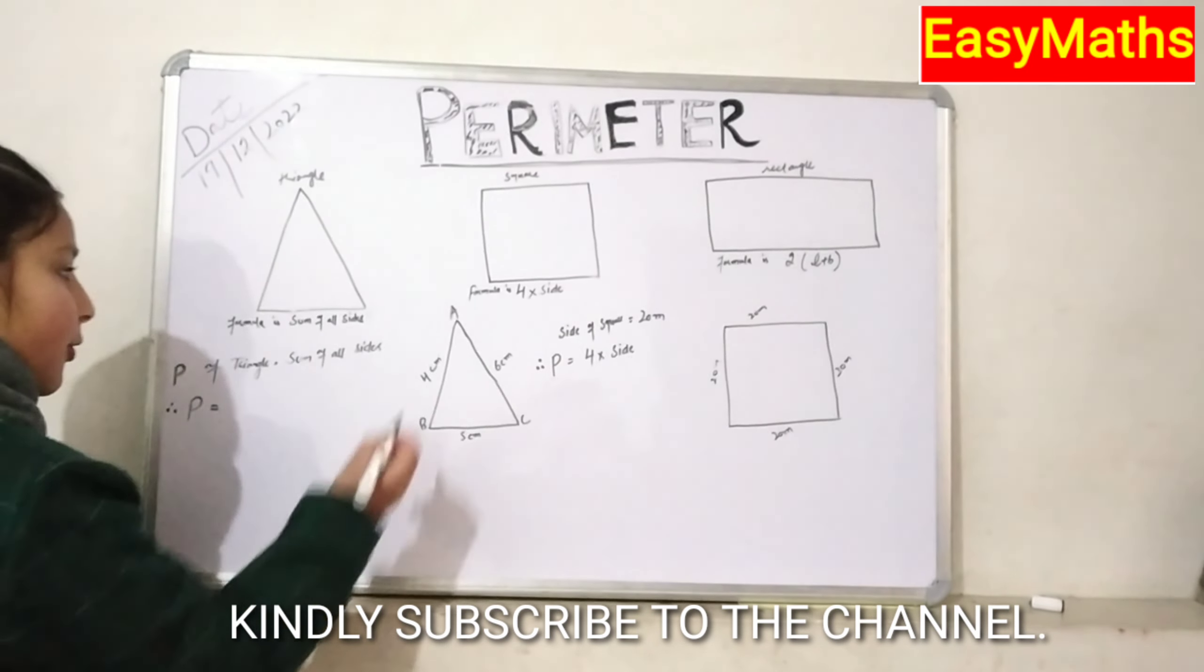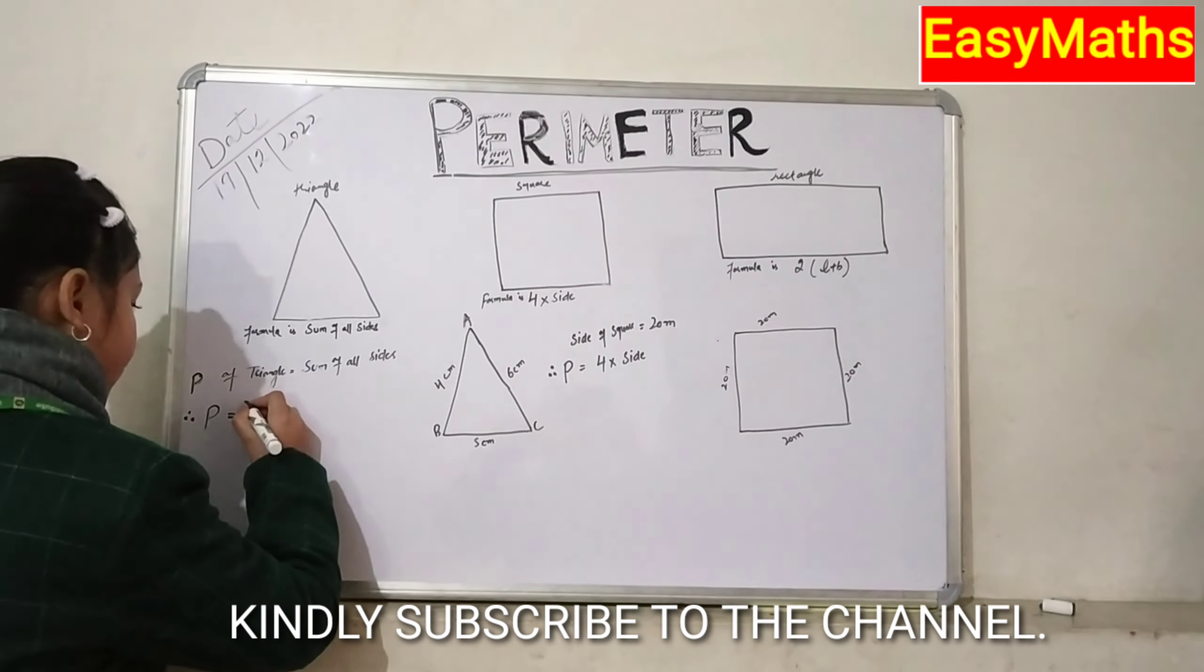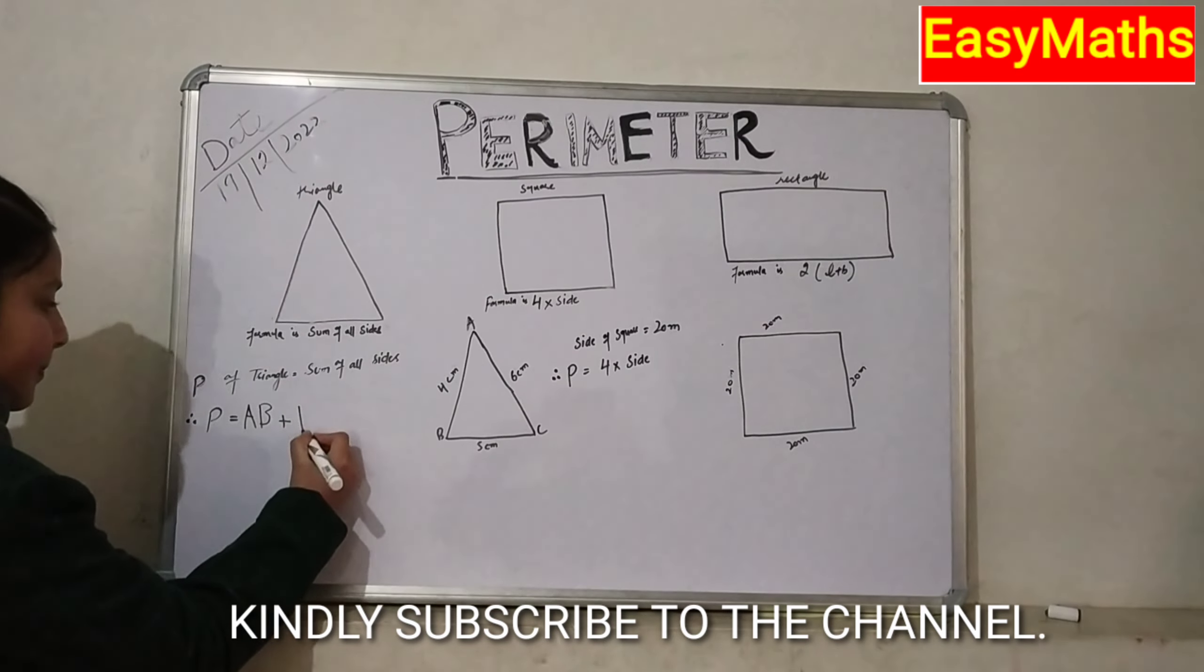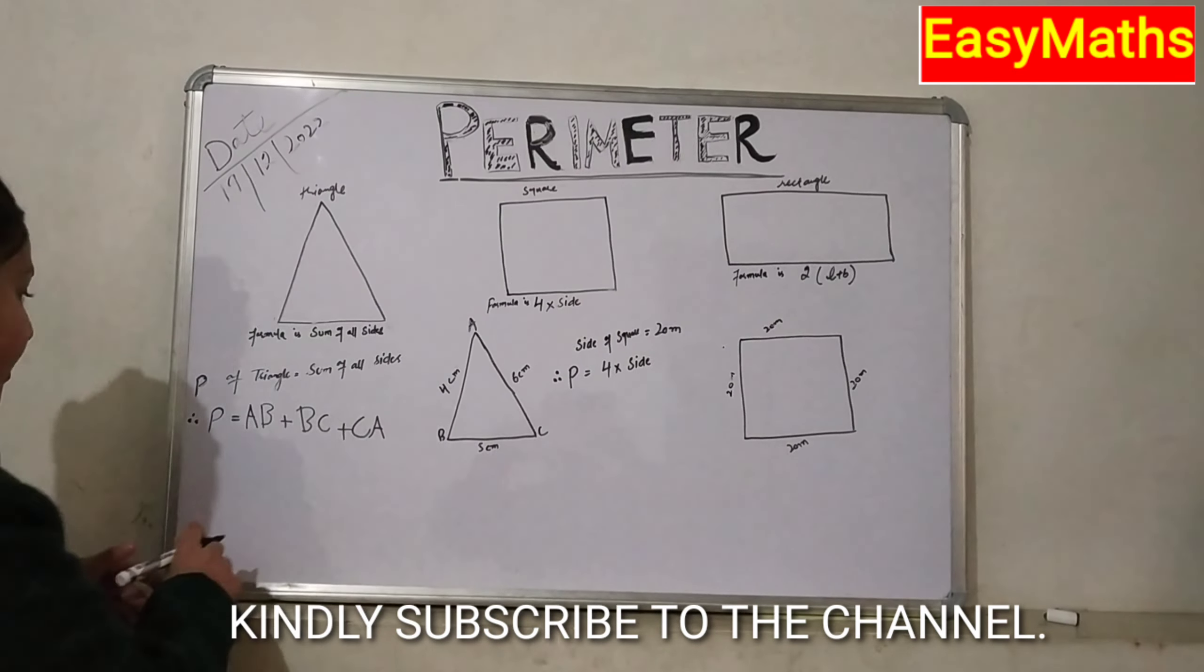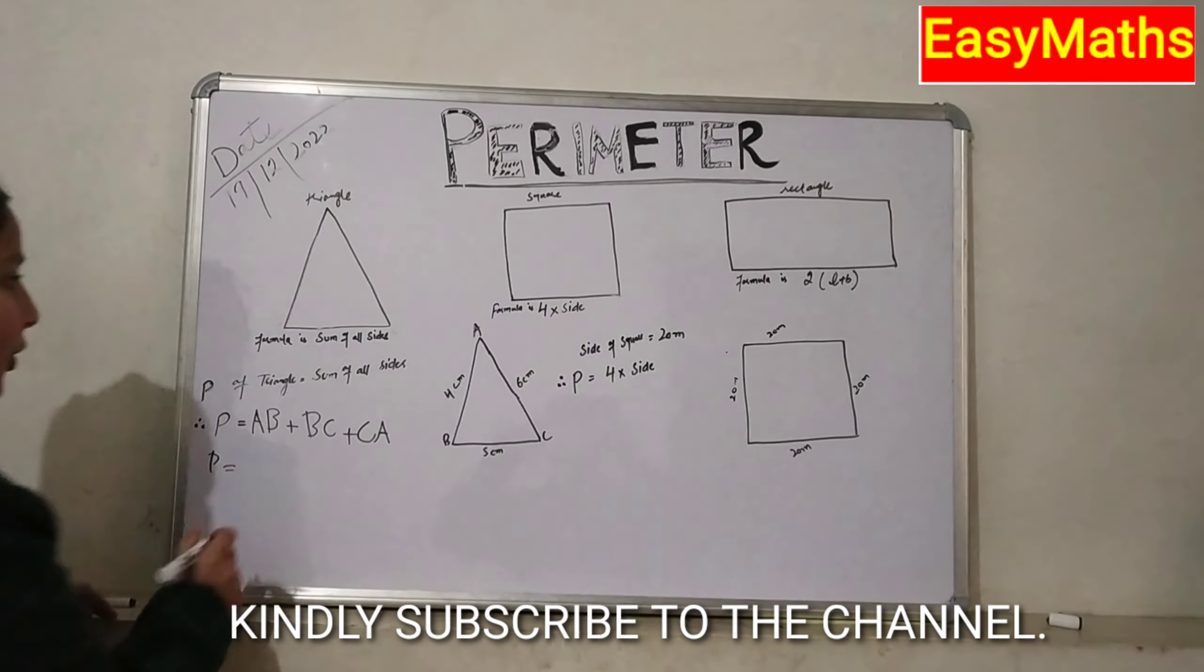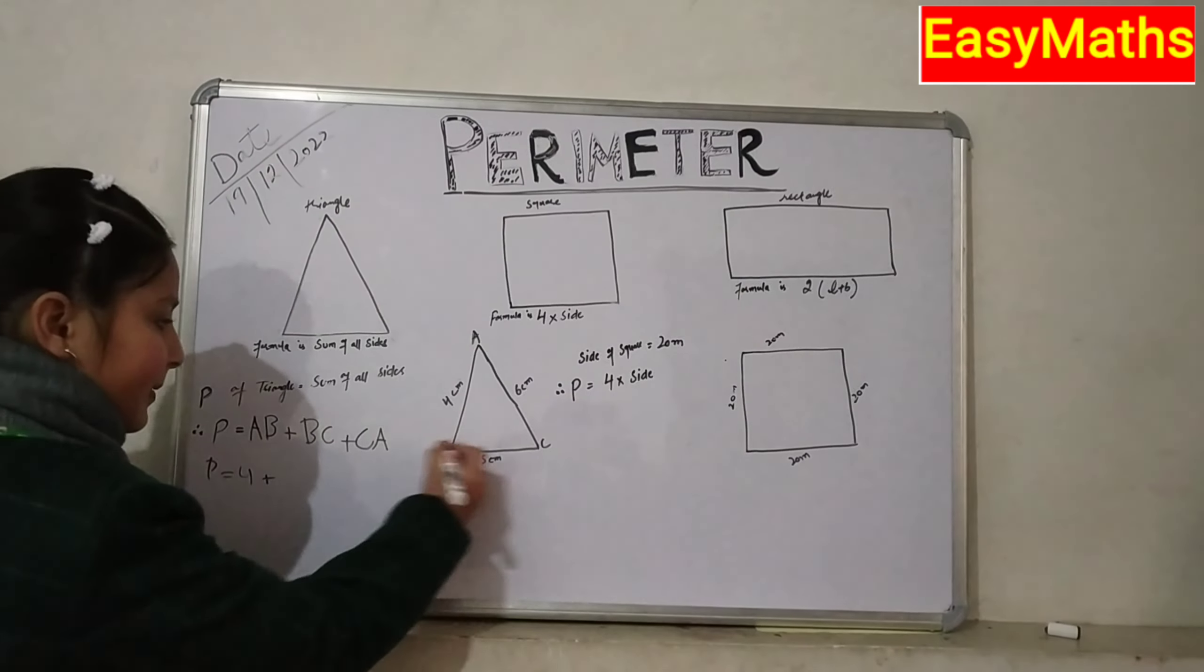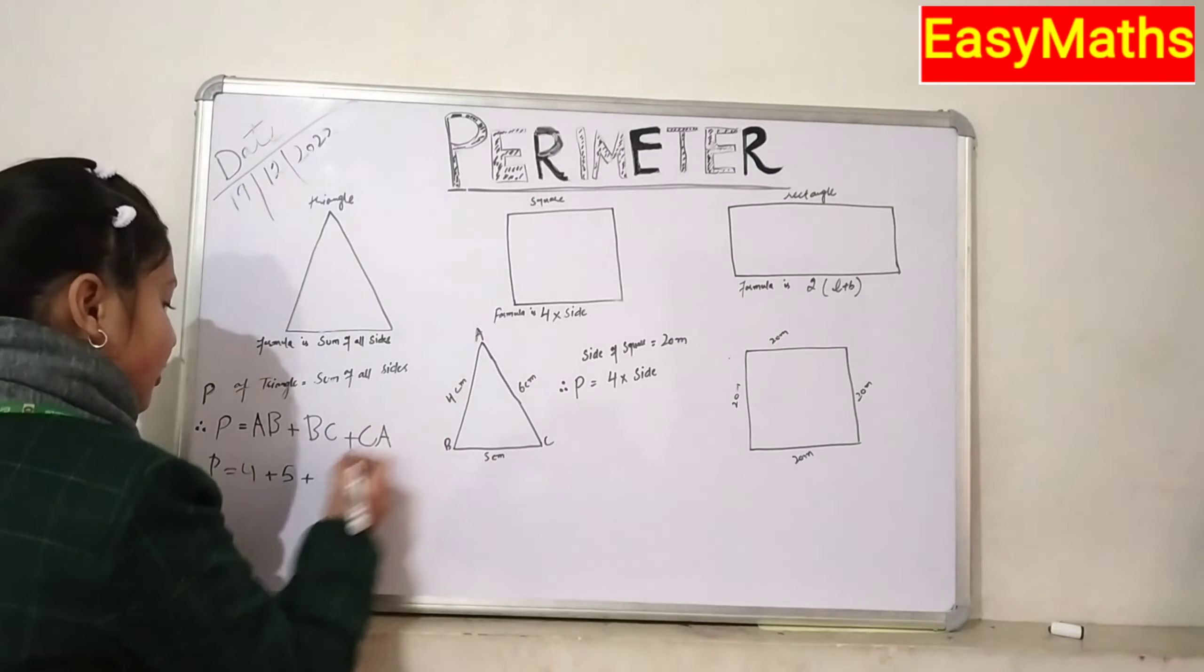Therefore, perimeter is equal to the sides of a triangle are AB, BC, and CA. AB plus BC plus CA. Perimeter is equal to AB is equal to 4 cm, 4 plus BC is equal to 5 cm, plus CA is equal to 6 cm, 6.